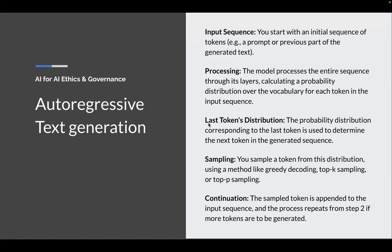Importantly, what it's going to do is look at the last token's distribution. The probability distribution corresponding to the last token is used to determine the next token in the generated sequence. There's some sampling of that last token, and there are different sampling methods like greedy decoding, top-K sampling, or top-P sampling. The sampled token is then appended to the input sequence, and the process repeats for more tokens to be generated.